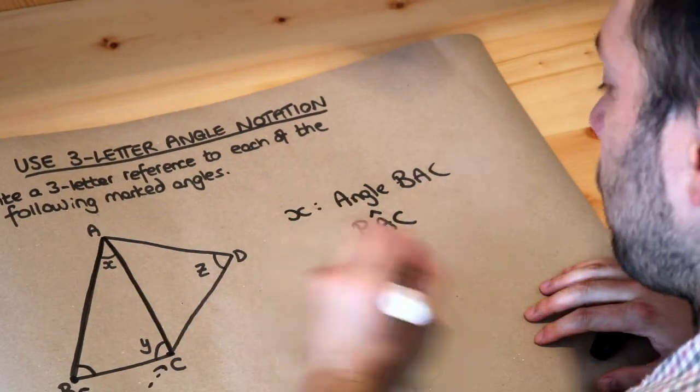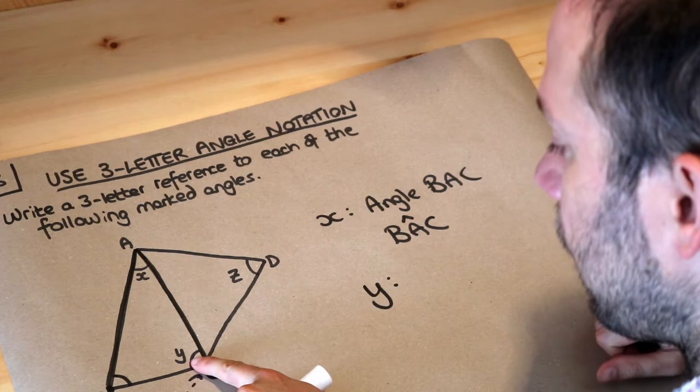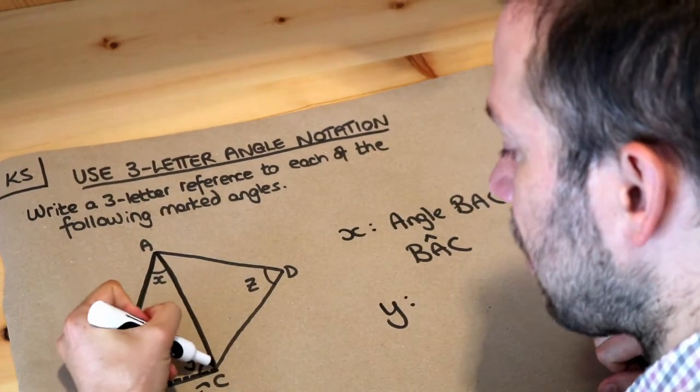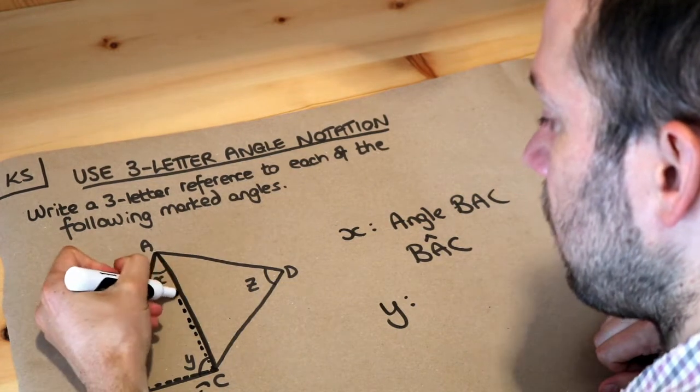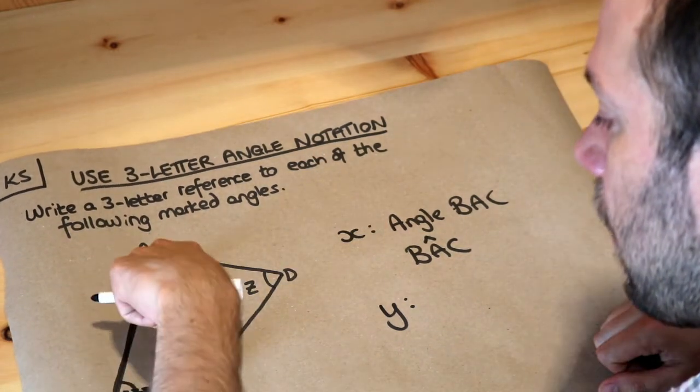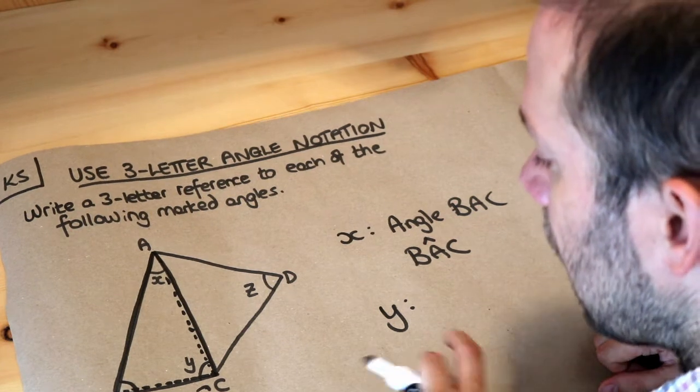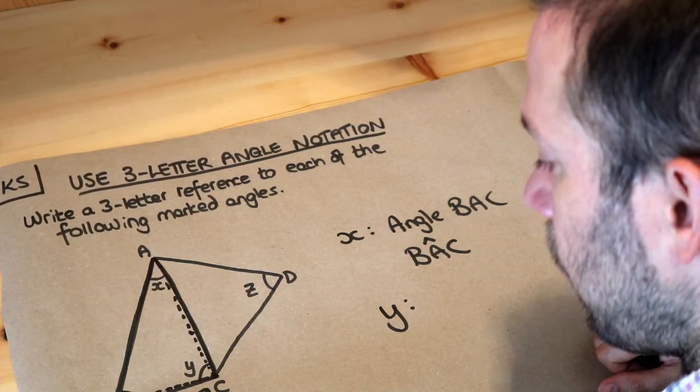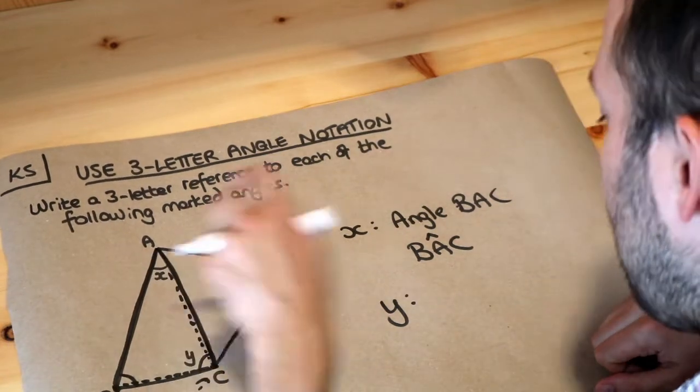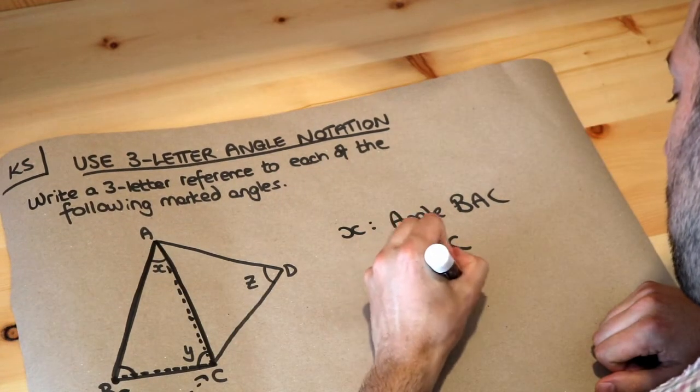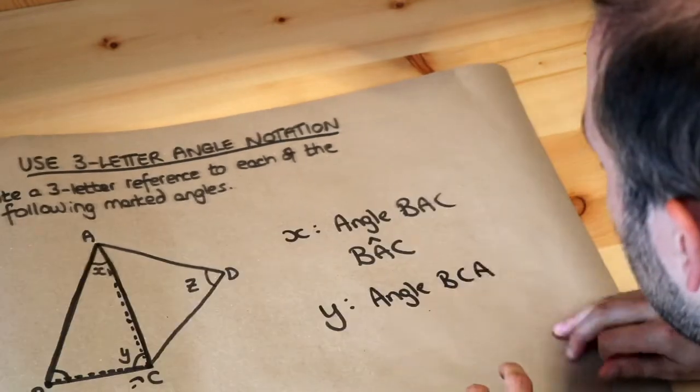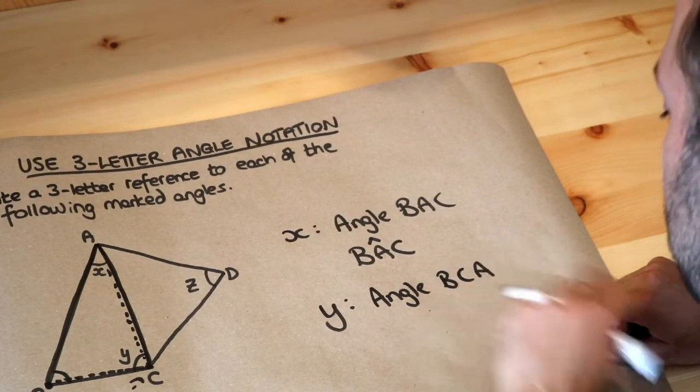What about Y? How could we refer to this angle here? Well, if we do the same thing, if we look at the two lines either side of the Y, it's these two lines here, that line and that line that we've got the angle between. If we start from one end of this double line, let's start here for example, we've got BCA. So it's angle BCA, or if we prefer we can put a little caret above the C.